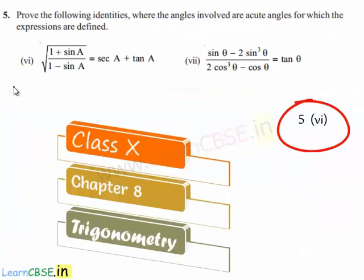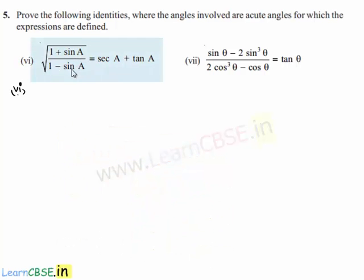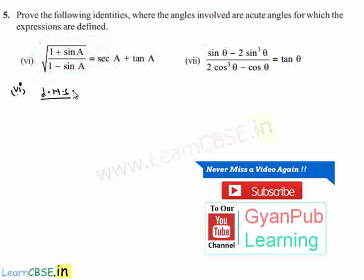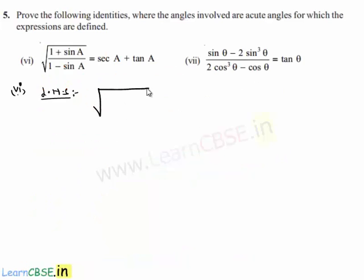Now moving on to the sixth bit of the fifth problem. We are asked to prove that root of 1 plus sin A by root of 1 minus sin A is equal to secant A plus tan A. In order to prove this, let us consider the left hand side first, that is root of 1 plus sin A divided by 1 minus sin A.